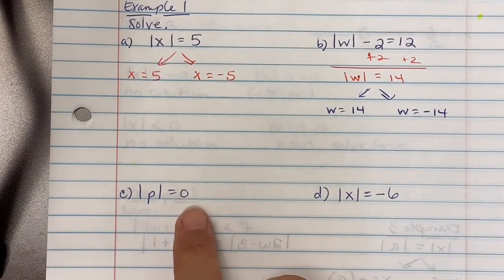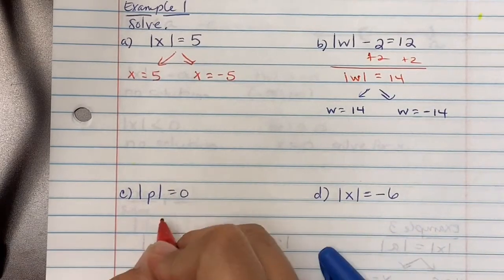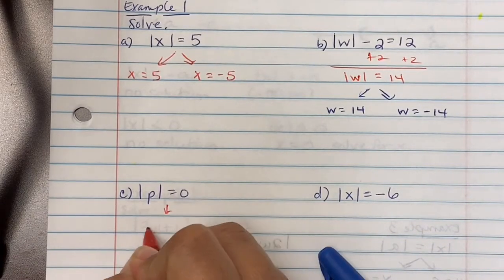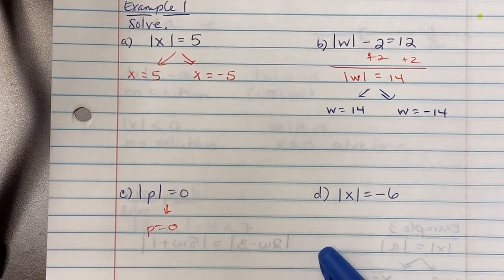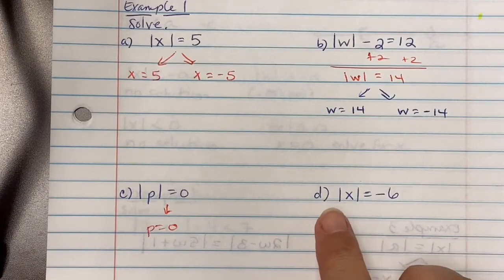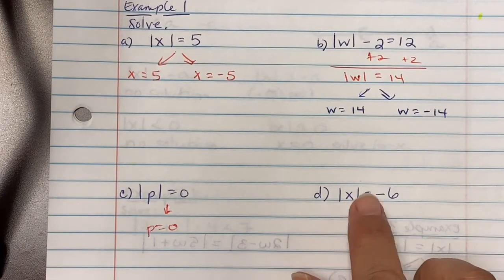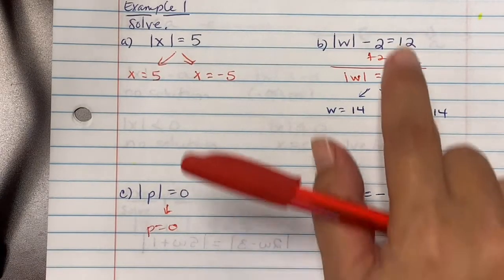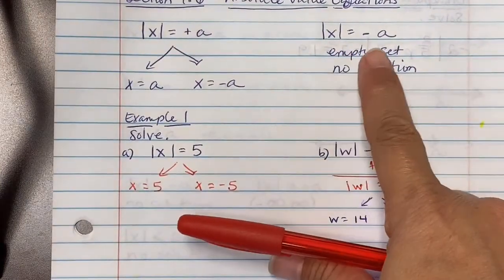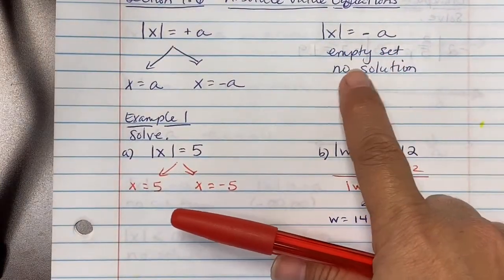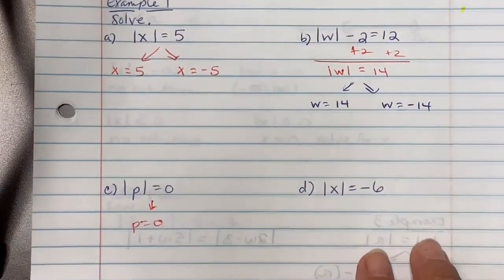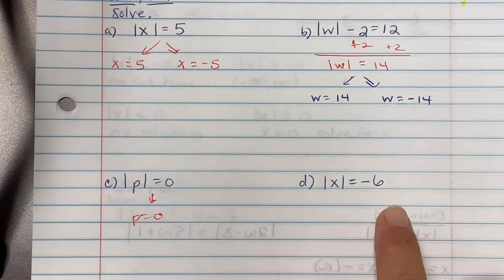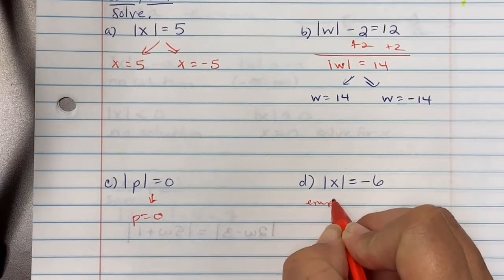Part c: absolute value of p equals zero. There is no positive or negative value of zero, so your only solution is p equals zero. Part d: absolute value of x equals negative six. If it's equaling a negative number, it's an empty set — no solution. Since it's equaling negative six, this is an empty set.